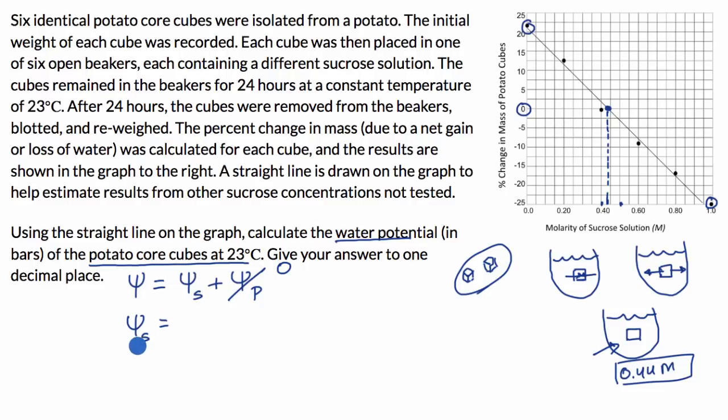So the solute potential, we have introduced ourselves to this formula in previous videos. It's negative i times c times r times t. This i right over here, this is our ionization constant. Since we're dealing with sucrose solution, if I took sucrose and put it into water, every one of those sucrose molecules, does it stay one molecule or does it disassociate? Well, sucrose doesn't disassociate at all. It just stays one molecule. So this would be one. If we're dealing with, say, sodium chloride, each sodium chloride molecule would disassociate into a sodium ion and a chloride ion. And so then this would be two. But this was one for sucrose.